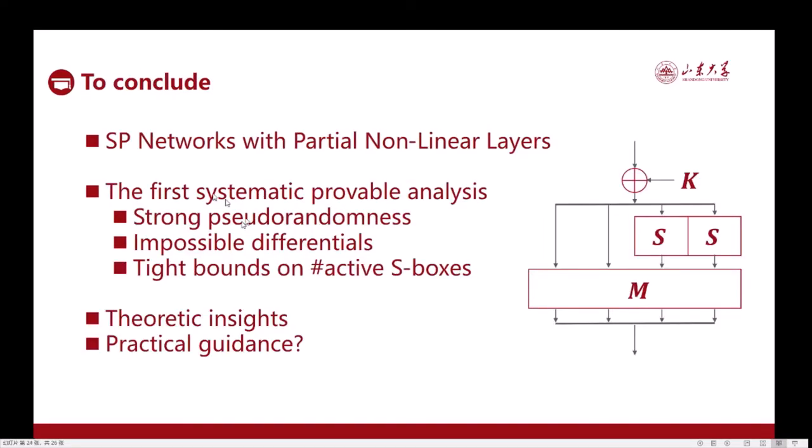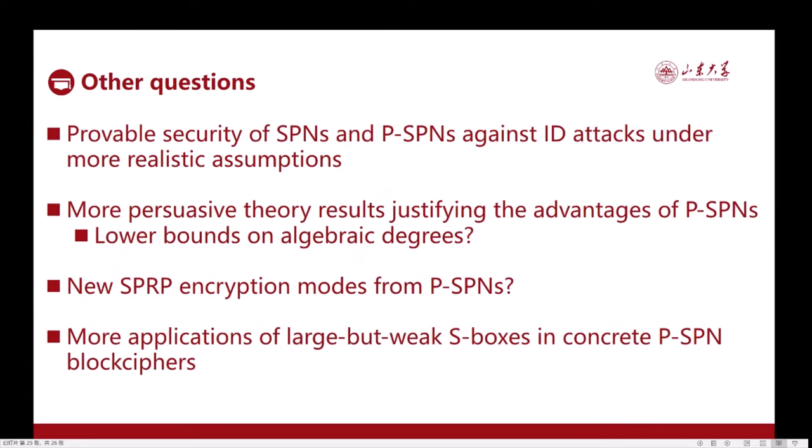To conclude, we make the first step towards understanding the theoretical soundness of the partial SPN networks, provide the first systematic probable security treatments regarding different security definitions, and an approach to design the linear layers. Of course, there are a number of possibilities for the future, including to weaken the assumptions of security proofs against the impossible differentials, to seek for new SPRP encryption modes from the PSPN structure, and to seek for more applications of large but weak S-box methodology in concrete block ciphers. Also, one may consider the security of the four-round PSPN with rate 1 divided by 2.